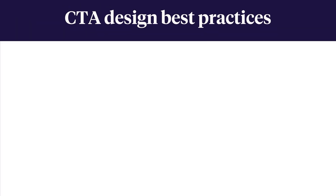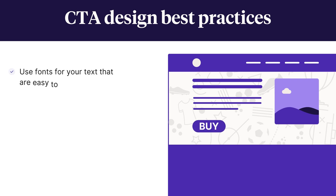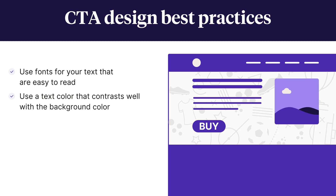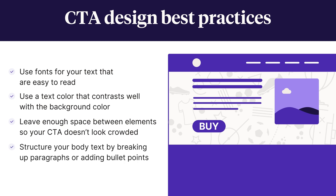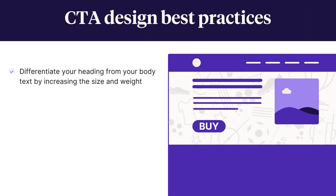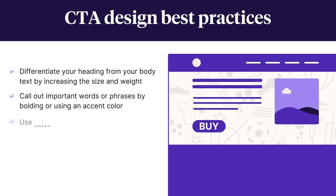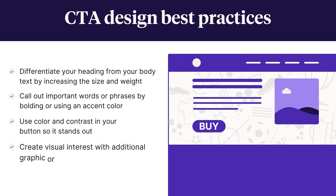Now that we know what a CTA is, where it should go on our page, and what it should say, we still need to make sure it's designed effectively. Standard design principles that work well include: use fonts that are easy to read; use a text color that contrasts well with the background; leave enough space between elements so your CTA doesn't look crowded; and structure your body text by breaking up paragraphs or adding bullet points. Also differentiate your heading from your body text by increasing size and weight, bold or use an accent color for important words, use color and contrast in your button so it stands out, and create visual interest with graphic or background elements. If you have a few design options and aren't sure which is best, feel free to test each one to find out which is most effective.